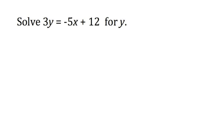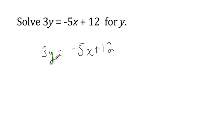Let's take another example, going through this one a bit more quickly. We have 3y equals negative 5x plus 12. Step 1: simplify both expressions — a quick glance tells you neither can be simplified. Step 2: get your variable to one expression — y is only in the left-hand expression, so it's already there. Step 3: get your variable alone. In the expression with my variable, there are no terms without the variable to get rid of. So we move straight to multiplying both expressions by the reciprocal of the coefficient, which is 1 third.